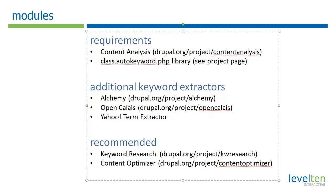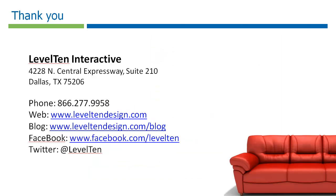The other module — which wasn't in the demo — that you might want to use is the content optimizer. Once you've decided what keyword you want to optimize a node around, the content optimizer will tell you how well you've optimized that content for that particular keyword. I hope you've enjoyed this demo of the keyword analysis module, and until next time — Happy Drupaling!